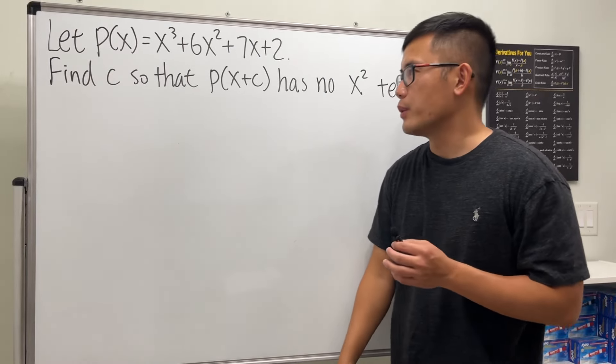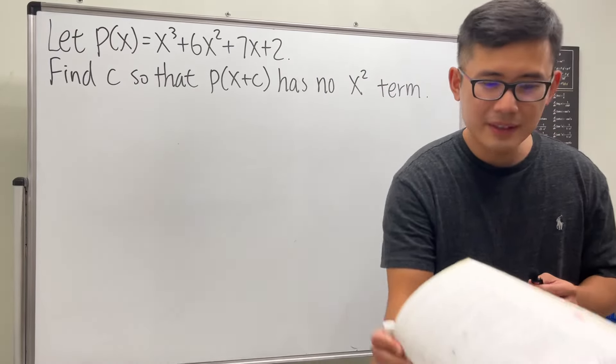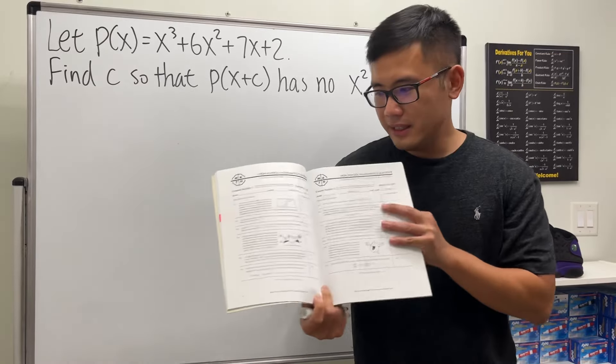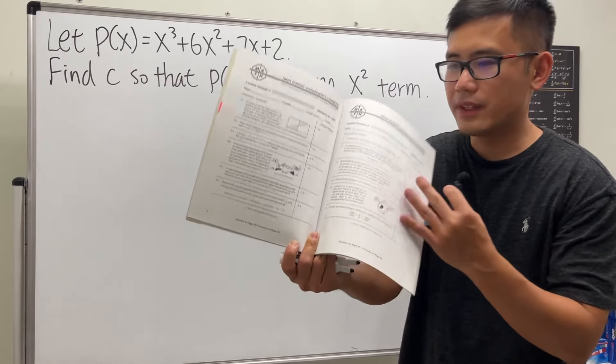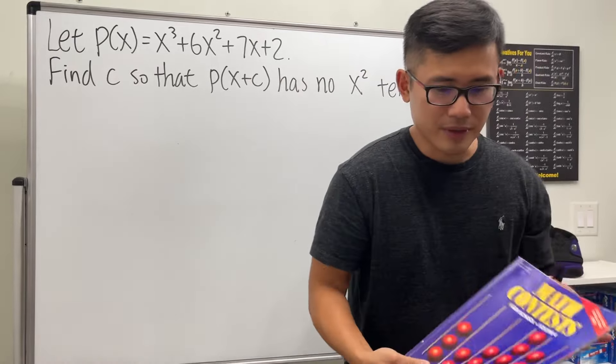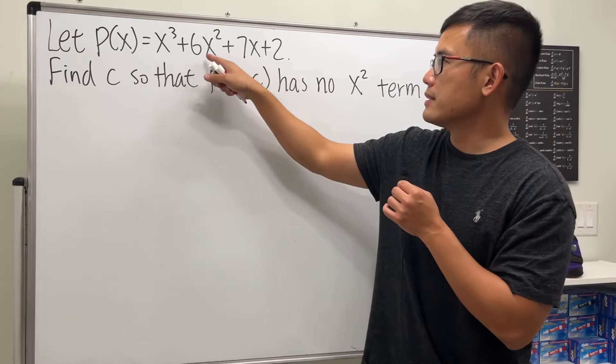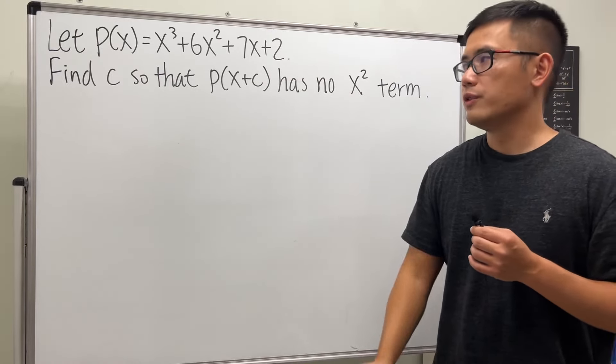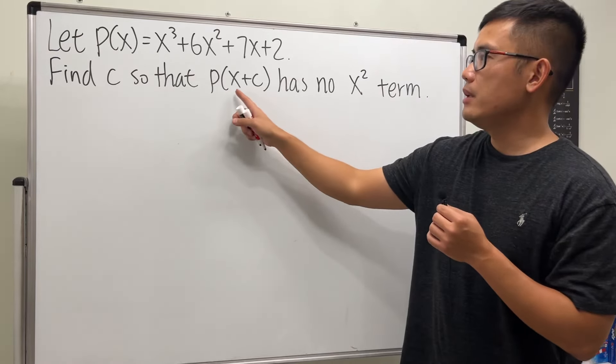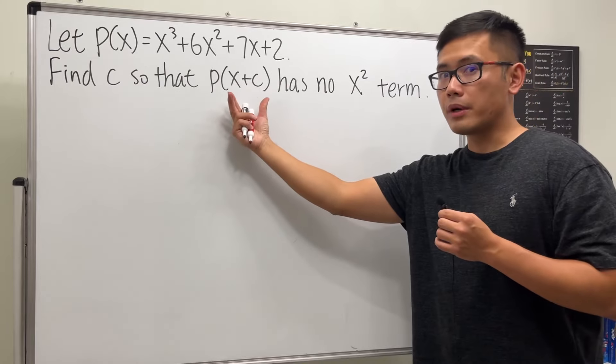Okay, here's a very interesting cubic equation question that I found from the Math League contest in the year 1997. Here's the question: we are given a cubic polynomial x³ + 6x² + 7x + 2, and our goal is to find c so that P(x+c), this new polynomial, has no x² term.